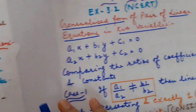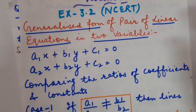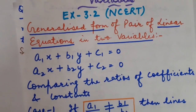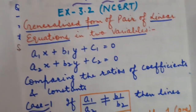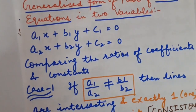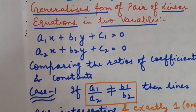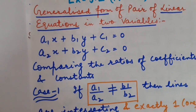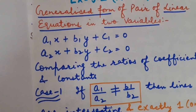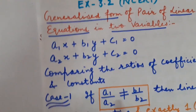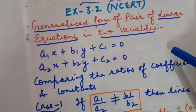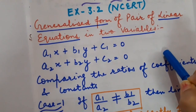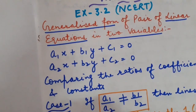Now the question arises: is it mandatory every time to draw lines on the Cartesian plane to judge what kind of lines will be formed — whether intersecting, coinciding, or parallel? The answer is no. There is another method, which is based on the ratio of the coefficients of the variables present in a pair of linear equations. So let's start today's lecture.